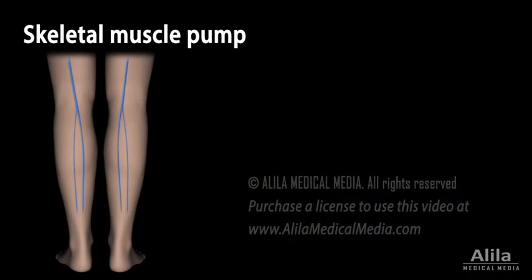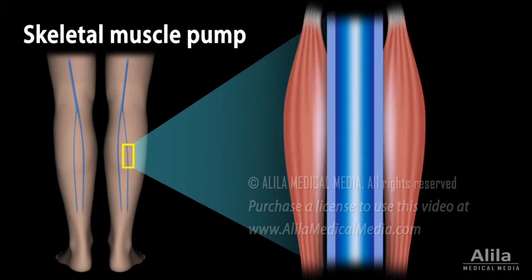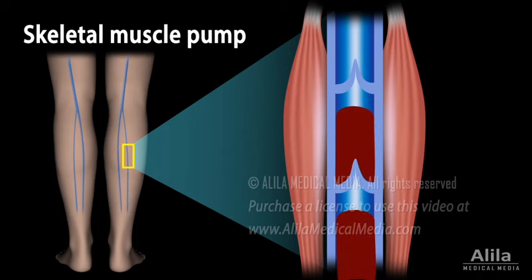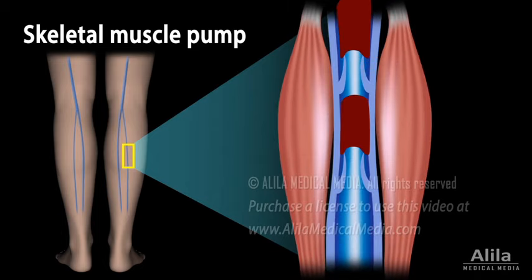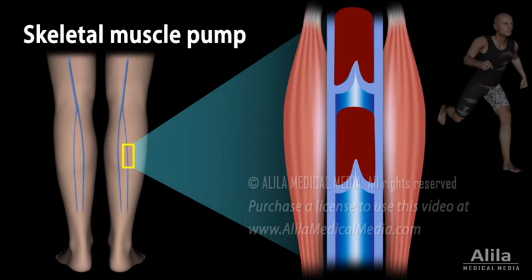Skeletal muscle pump: veins in the arms and legs are surrounded by skeletal muscles. They also have one-way valves in their walls that only open for upward flow. During everyday activities, such as walking, the muscles contract and squeeze blood in the veins upward toward the heart. The one-way valves prevent blood from flowing down again when the muscles relax. This is one of the mechanisms by which physical exercise increases cardiac output to meet the body's needs.